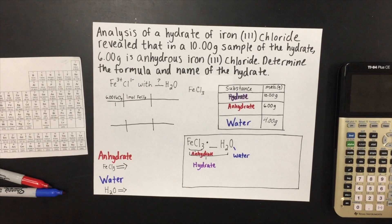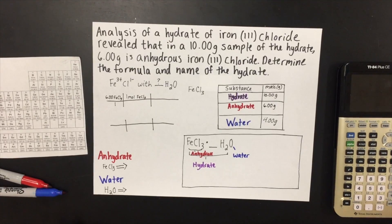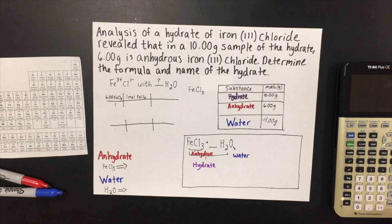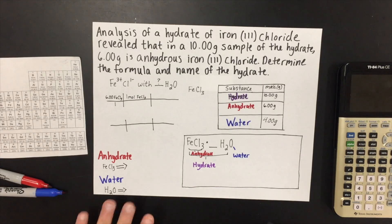In this video, a student is helping you learn how to do empirical formulas of hydrates. Today we'll be doing the analysis of a hydrate of iron(III) chloride. Analysis revealed that in a 10 gram sample of the hydrate, 6 grams is anhydrous iron(III) chloride. Determine the formula and name of that hydrate.